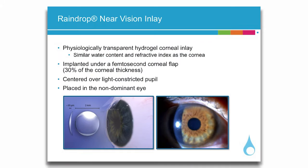The Raindrop Near Vision Inlay is composed of a physiologically transparent hydrogel material which is similar in water content and refractive index as the cornea. It is only 2 millimeters in diameter and approximately 30 microns thick, and has no intrinsic power.